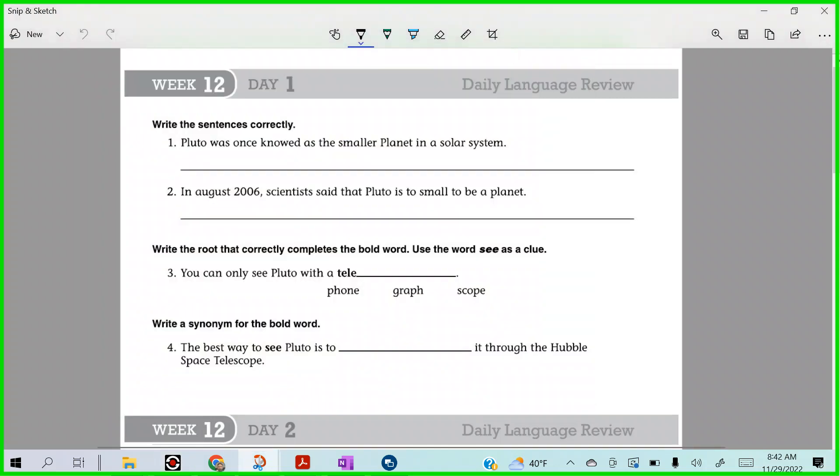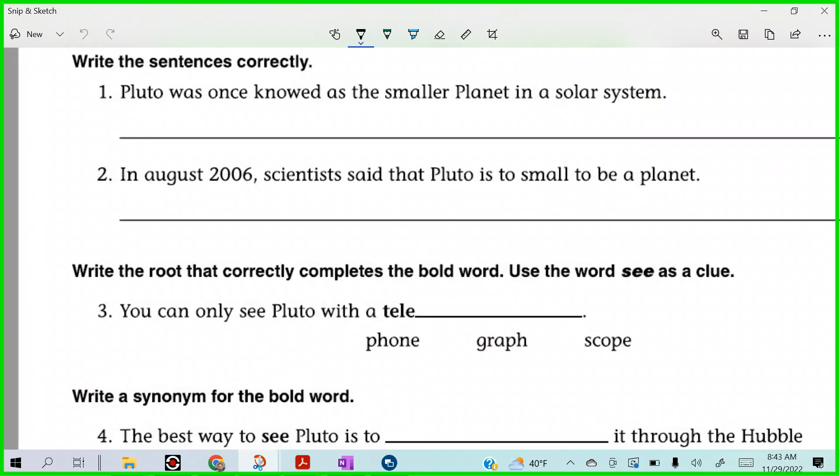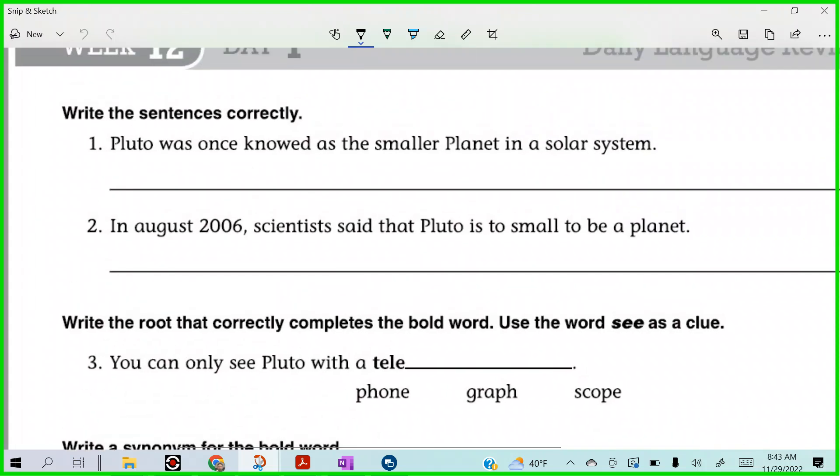Alright, we are week 12, day 1, DLR, and it says, Pluto was once known as the smaller planet in a solar system. There's a lot of mistakes in this one. It's hard to read the way it is written. But that's what you need to do, right? Because what's our mantra, Gary?